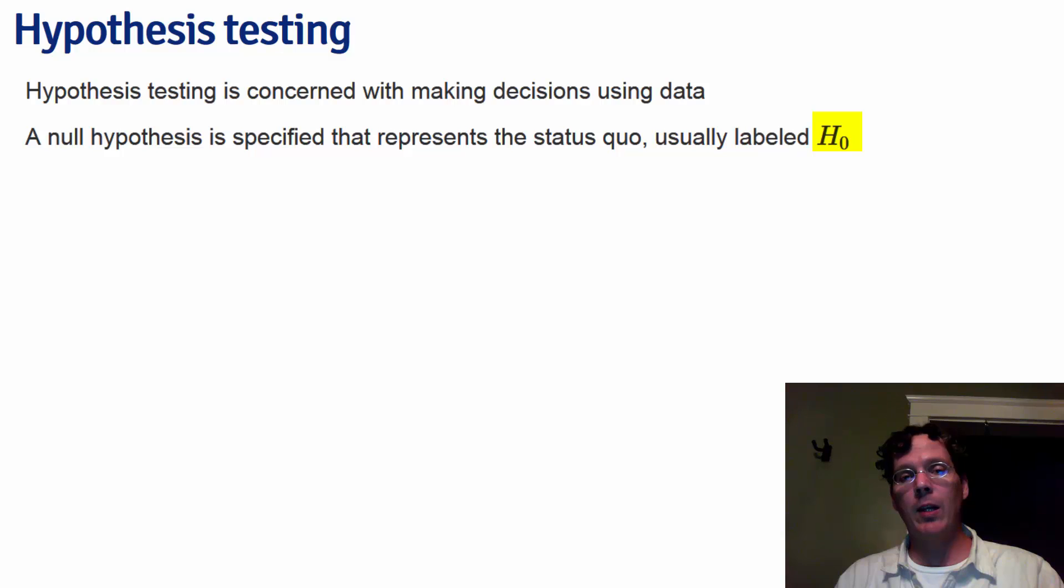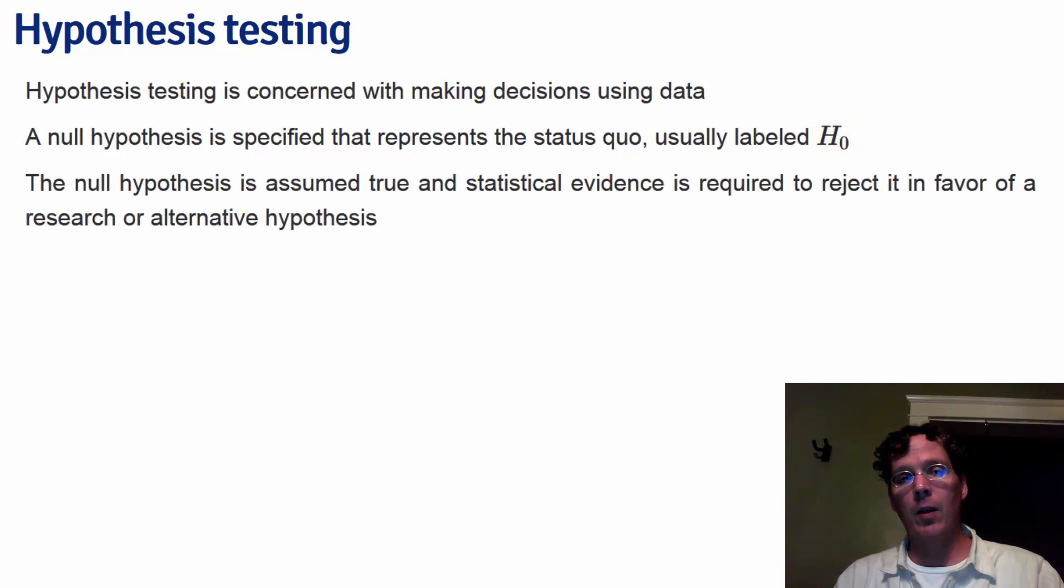It's usually labeled H₀ (pronounced H-naught). The null hypothesis H₀ is assumed to be true, and statistical evidence is required to reject it in favor of an alternative or research hypothesis.